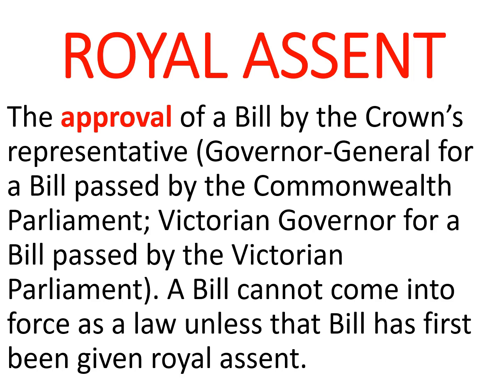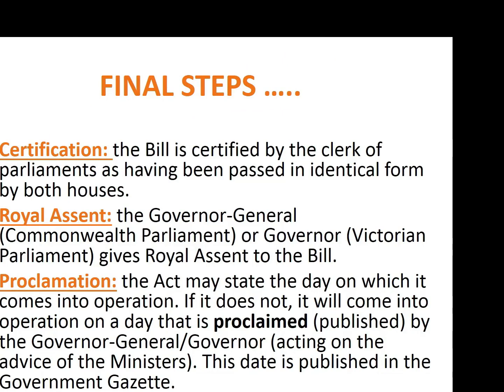Once a bill has received royal assent, we refer to it as an Act. The final stage is proclamation. If the Act itself states the day on which it comes into operation, it will come into operation as a law on that day. However, if the Act does not state a commencement date, it will come into operation on the day proclaimed — that is, published — by the Governor-General acting on the advice of the Commonwealth Government, or by the Victorian Governor in the case of Victorian Acts. The proclamation date is published in a publication called the Government Gazette.